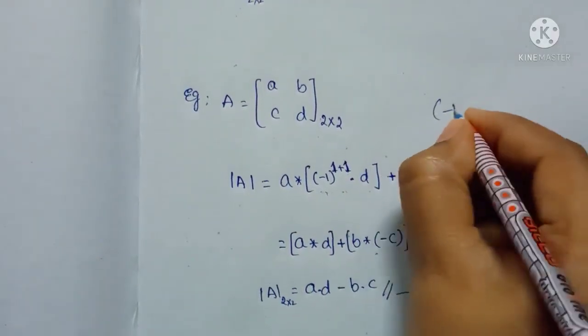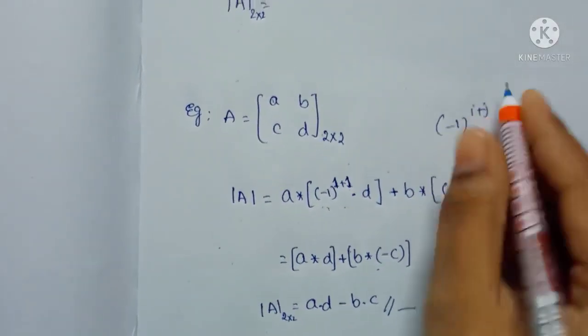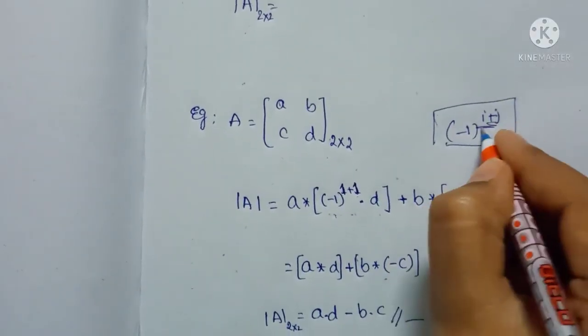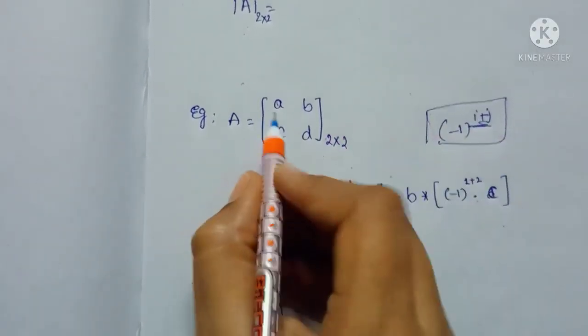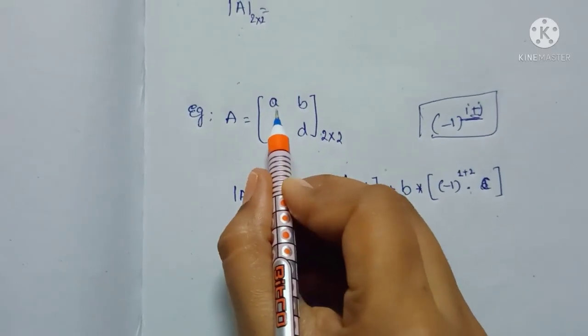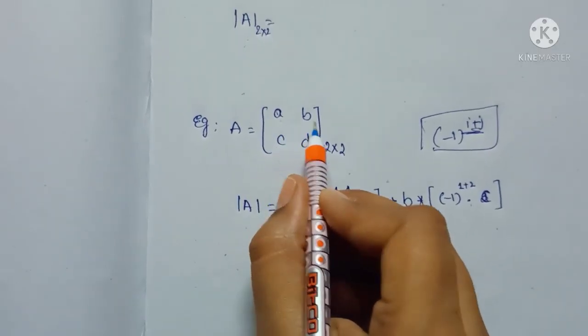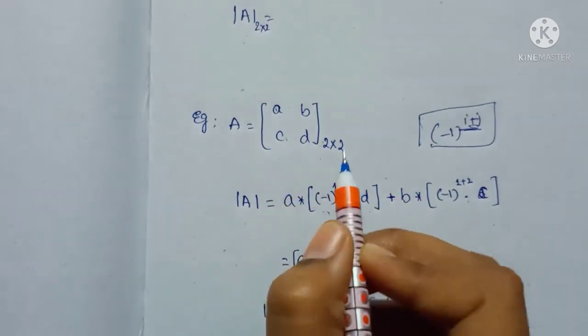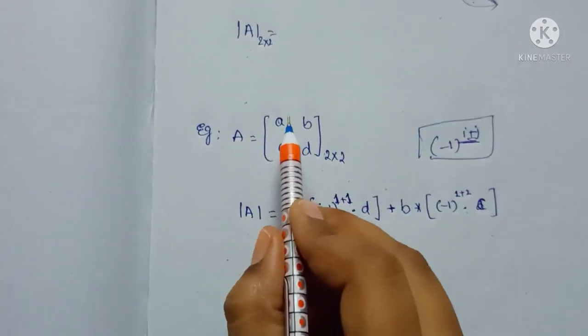Minus 1 to the power I plus J, where I and J indicate the position of the matrix. If you see A as A11, that is first row and first column of the matrix, then I and J values are 1 and 1.